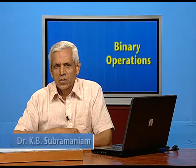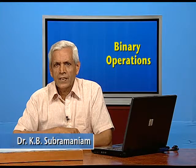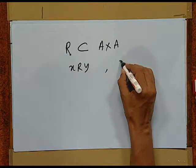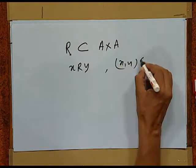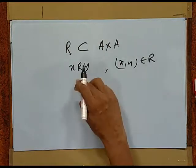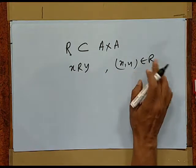Hello students. In the last episodes we discussed functions and binary operations in detail. Today we study about the types of relations. Before that, I want to remark that sometimes we use the symbol xRy to designate the fact that (x, y) belongs to R. So, it is as per convenience we use this notation with equal meaning.